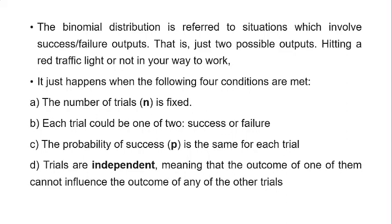The binomial distribution is preferred for situations which involve success or failure output — just two possible outcomes, such as hitting a red traffic light or not on your way to work. It applies when four conditions are met: the number of trials (n) is fixed; each trial has one of two outcomes — success or failure; the probability of success (P) is the same for each trial; and trials are independent, meaning the outcome of one trial cannot influence the outcome of any other trial.